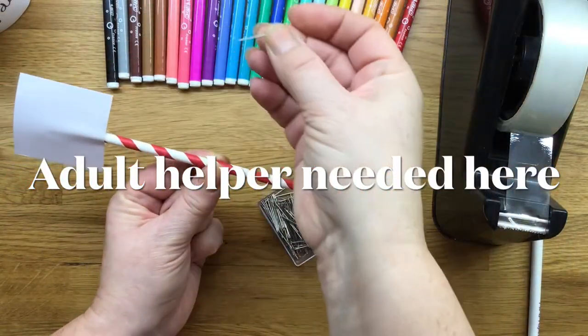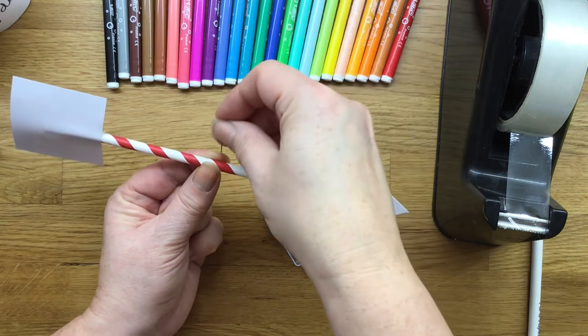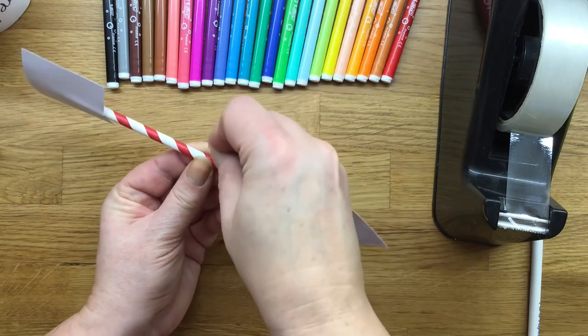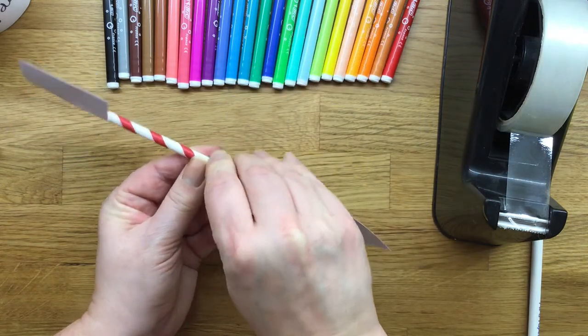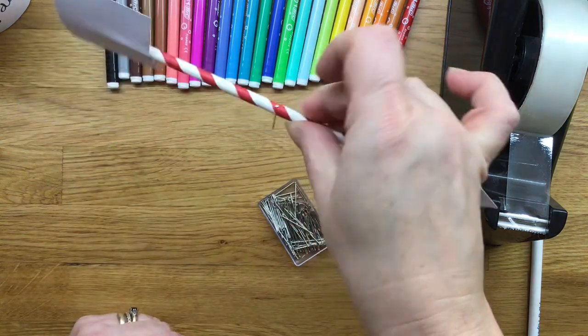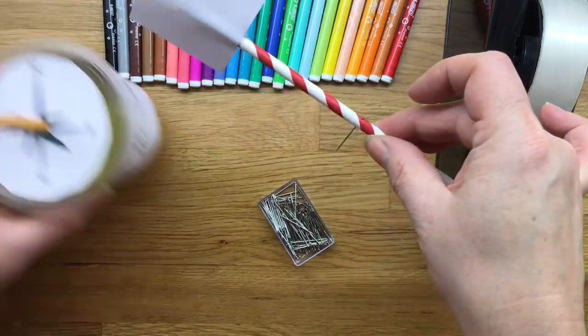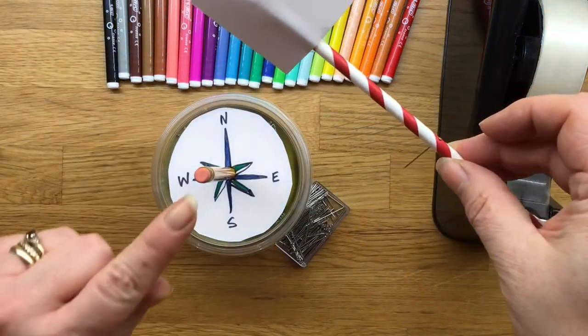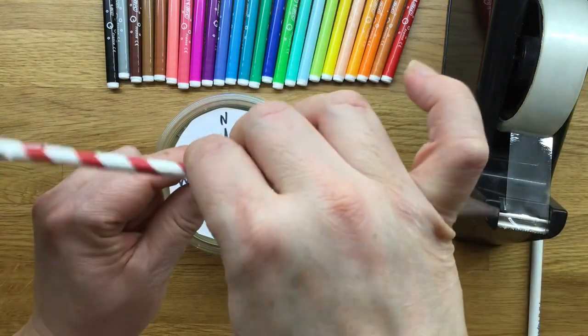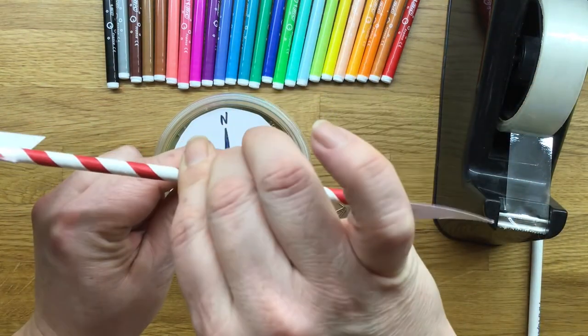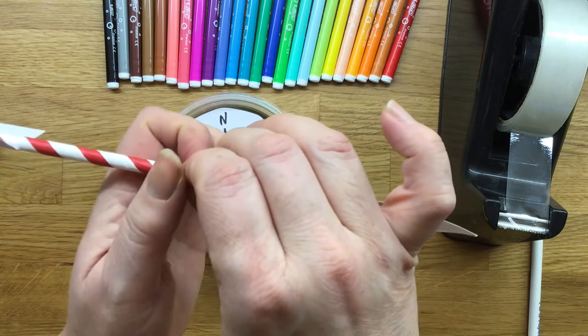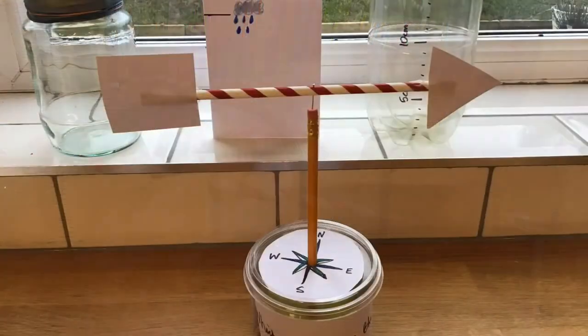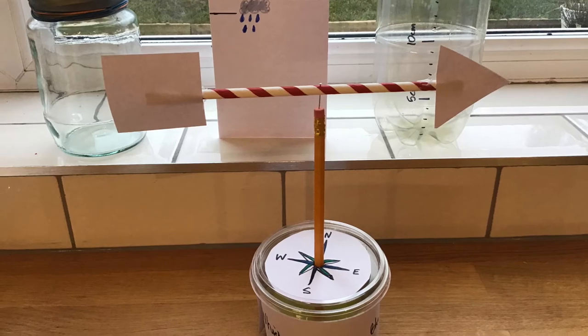Finally we make the pointer. As you can see here I've used a paper straw, a piece of square card and a piece of triangle card which I've secured onto the straw. Once it's secured then you can push your pin through the middle of the straw asking an adult for help and then push this pin into the rubber top of the pencil. This becomes your pointer for your weather vane.